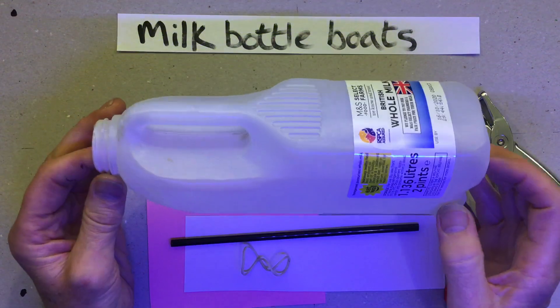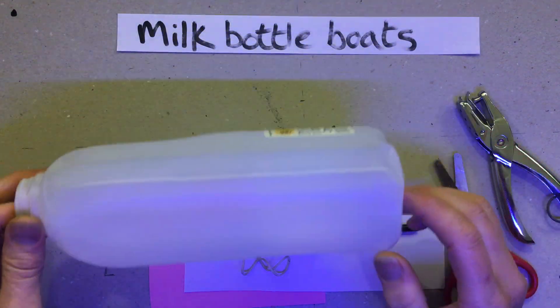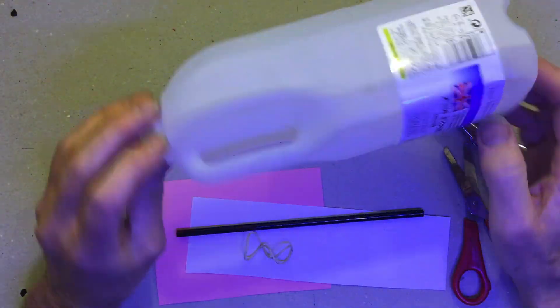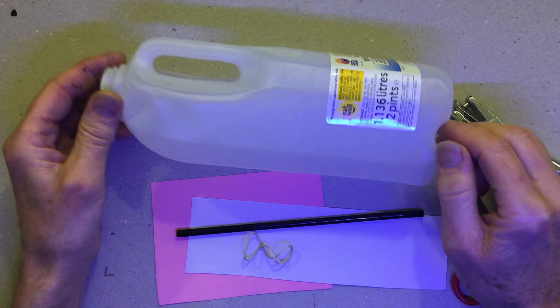Milk bottles are ideal for making boats. What we need is a plastic milk bottle, a two pint bottle.